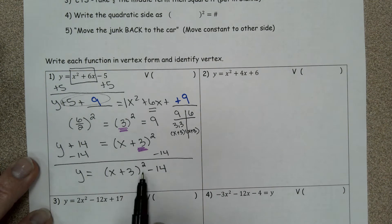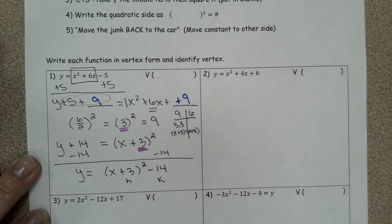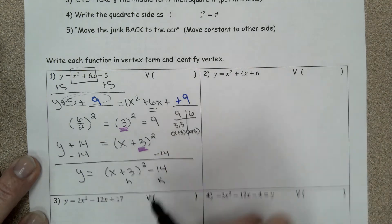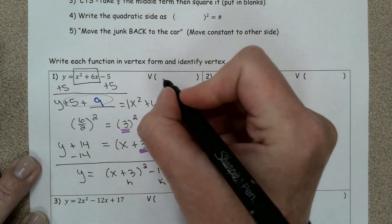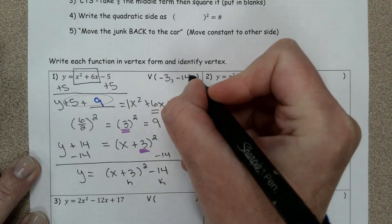So this is in vertex form. There's my h, there's my k. And so the vertex, your x, you always have to change signs so it's negative 3, negative 14.